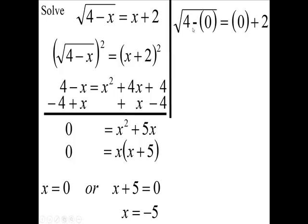Now, 4 minus 0 is 4, and 0 plus 2 is 2. And the principal, the non-negative square root of 4 is 2. So 0 checked. 0 checked out. 0 is one of my answers.